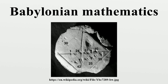Babylonian mathematics is a range of numeric and more advanced mathematical practices in the ancient Near East, written in cuneiform script. Study has historically focused on the old Babylonian period in the early 2nd millennium BC due to the wealth of data available. There has been debate over the earliest appearance of Babylonian mathematics, with historians suggesting a range of dates between the 5th and 3rd millennia BC. Babylonian mathematics was primarily written on clay tablets in cuneiform script in the Akkadian or Sumerian languages, with the earliest suggested origins dating to the use of accounting devices such as Boolean tokens in the 5th millennium BC.